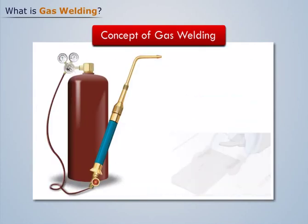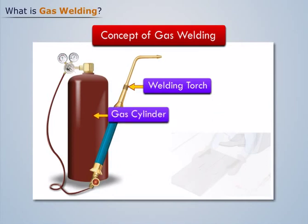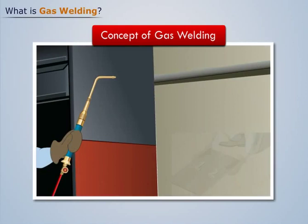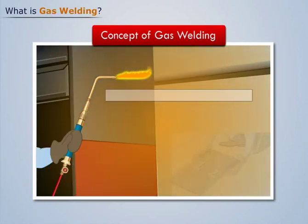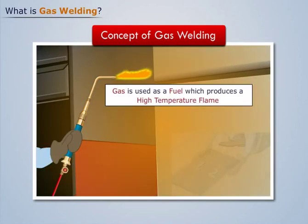For this, we take a welding torch connected to a gas cylinder with the help of a gas hose. When we ignite the torch, we see that the gas is used as a fuel which produces a high temperature flame at the tip of the torch.